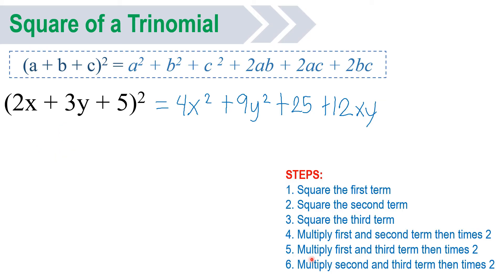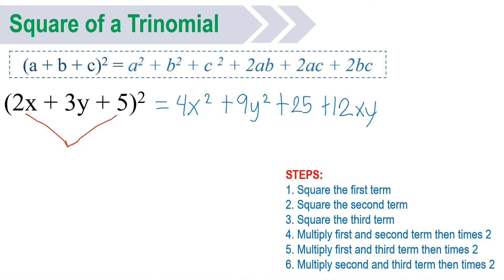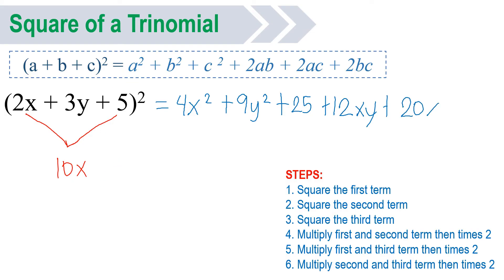Fifth step: multiply first and third term. First is 2x, third term is 5. 2x times 5, you will have 10x. Then times 2. So 10x times 2, it will become 20x.